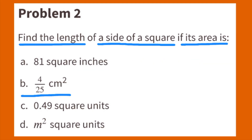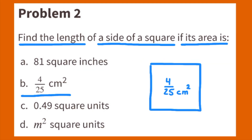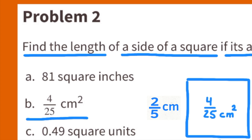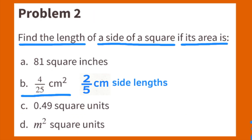If the area of a square is 4/25 centimeters squared, the side lengths would have to be 2/5, because 2/5 times 2/5 equals 4/25. The side lengths would be 2/5 centimeters long.